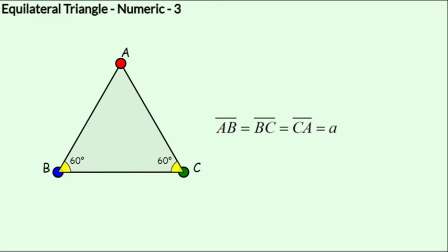An equilateral triangle ABC has three sides, AB, BC, and CA, each having a length of a.